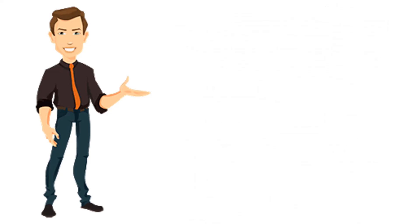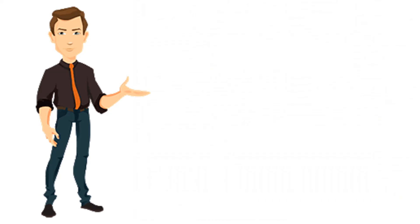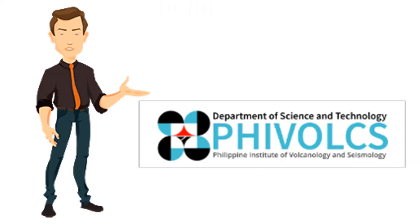If the structure is in Zone 4, NA and NV are required. The near source factors NA and NV can be found in Tables 208-5 and 208-6. Their values depend on the seismic source type and the closest distance to the seismic source.